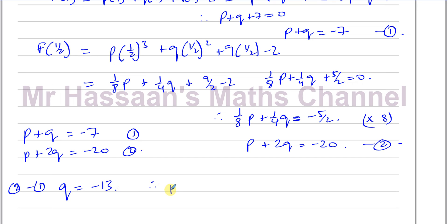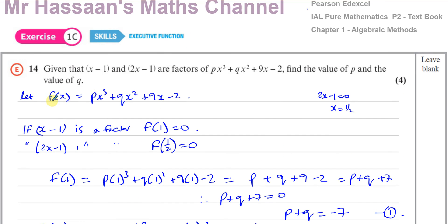And then to find p, p is going to be equal to -7 - q, just rearranging this equation. So p is -7 - (-13), which is +13, which is going to give you 6. So we have p = 6 and q = -13, and there's the answer to question number 14 from Exercise 1C.